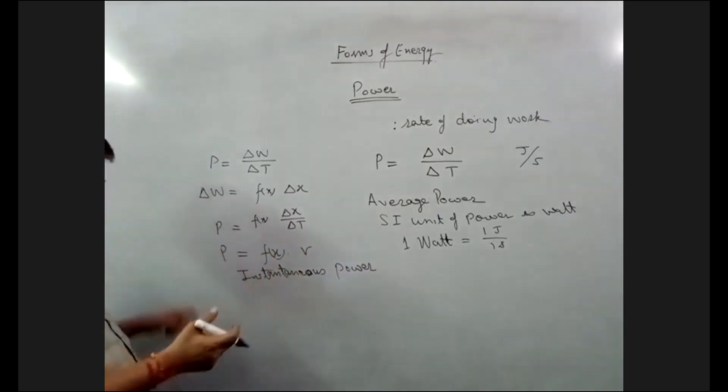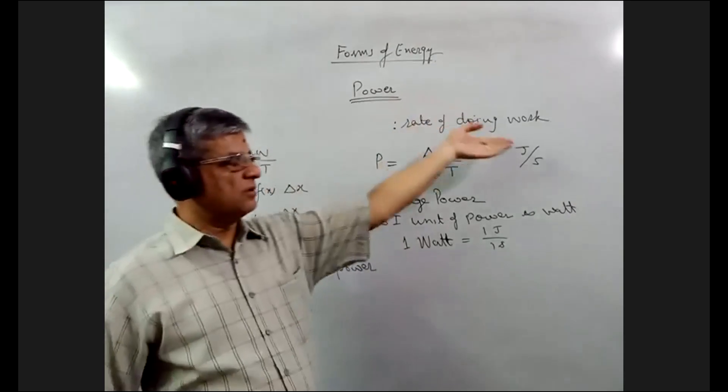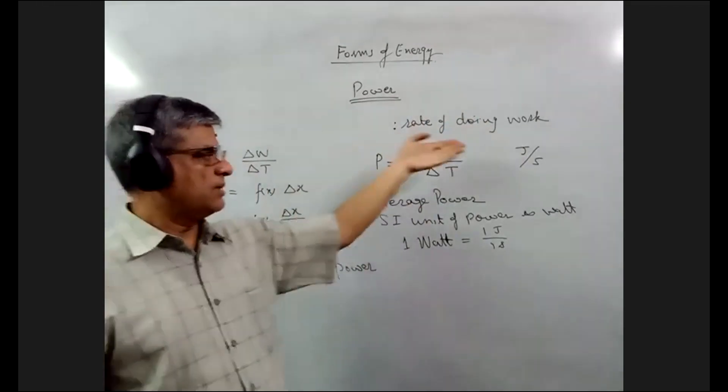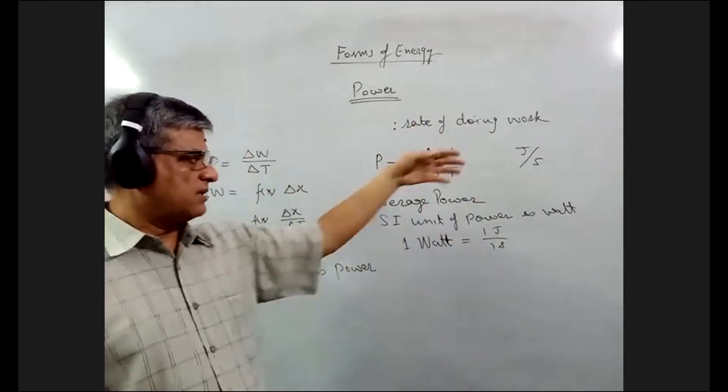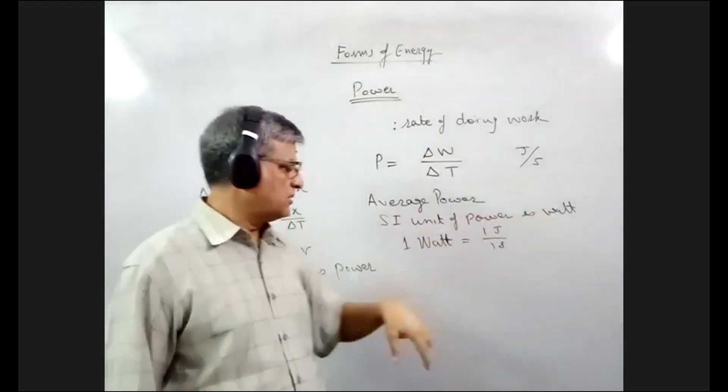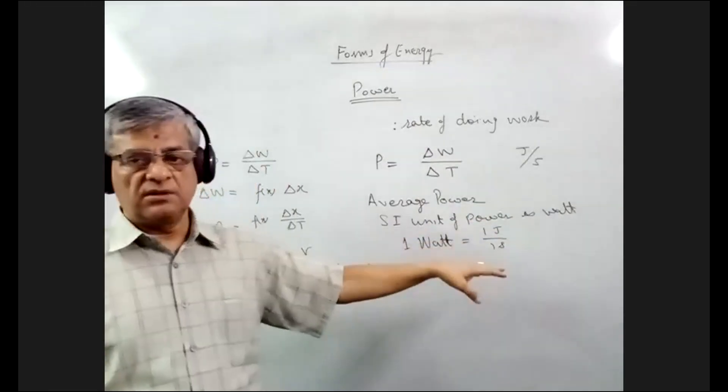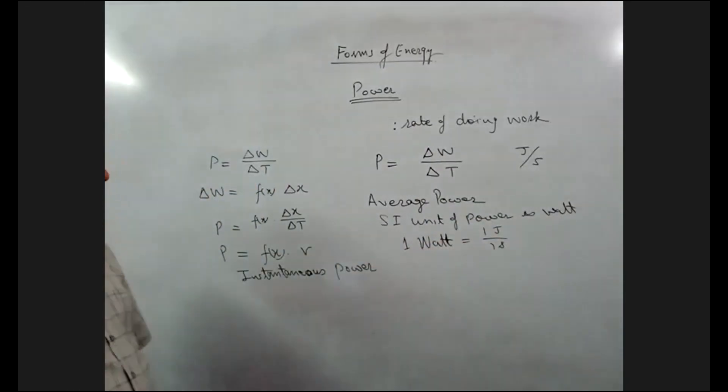So if velocity is large, power will be large. If velocity is less, power will be less. So power is defined as rate of doing work. So its unit becomes Joules per second. And this Joules per second is given a name in SI units as Watt. One Watt is when one Joule of work is done in one second.